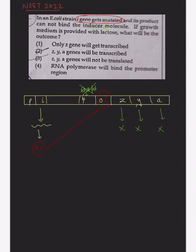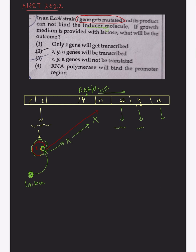In the presence of the inducer molecule — that is, lactose — the lactose binds to the repressor and brings about a conformational change in its shape. Because of this conformational change, the repressor is no longer able to bind to the operator region. RNA polymerase can now bind to the promoter region and initiate transcription of the Z, Y, and A genes, leading to formation of the enzymes required for lactose metabolism.